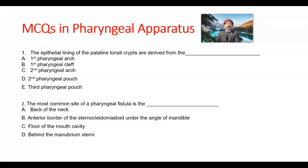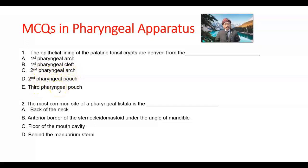Question number 1. The epithelial lining of the palatine tonsil crypts are derived from: the first pharyngeal arch, first pharyngeal cleft (also called first pharyngeal groove), second pharyngeal arch, second pharyngeal pouch, or third pharyngeal pouch. The answer is D, second pharyngeal pouch. These epithelial cells are endodermal because they are coming from the pouch.